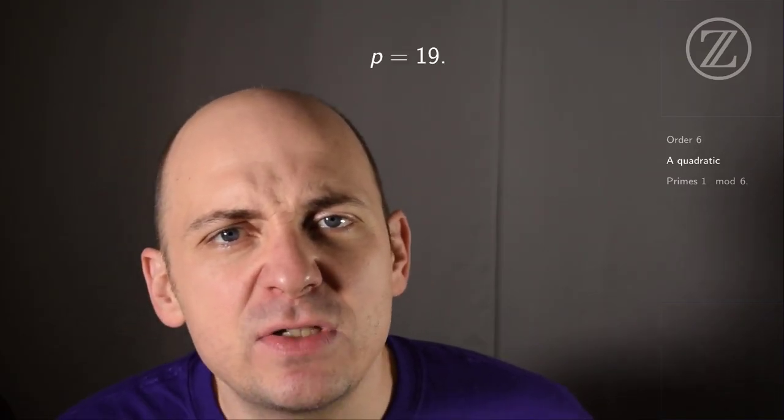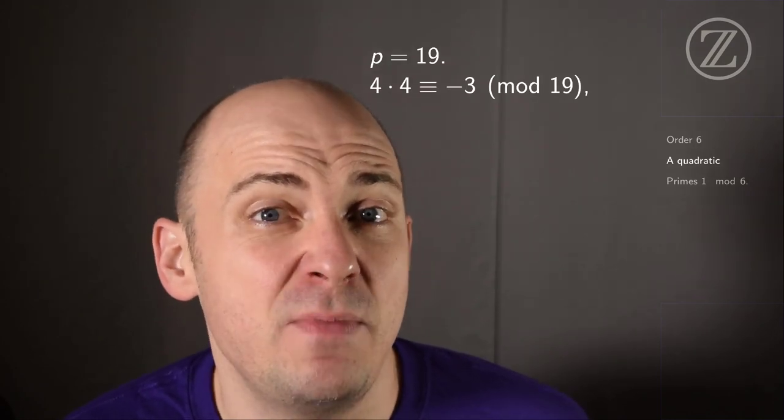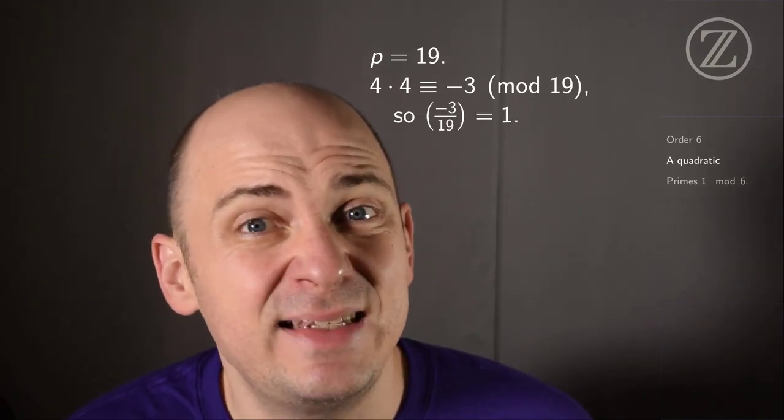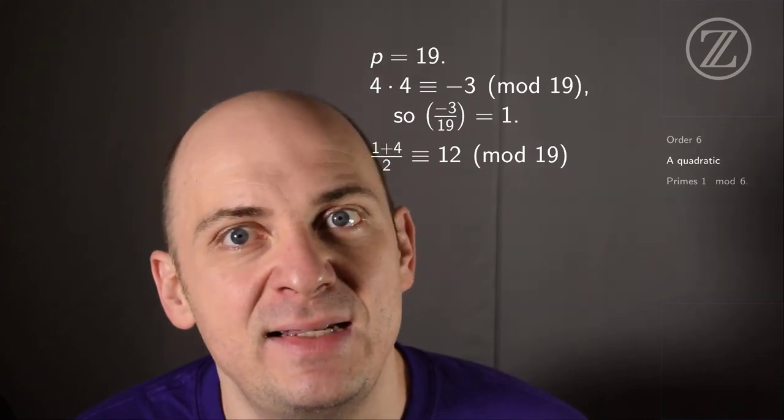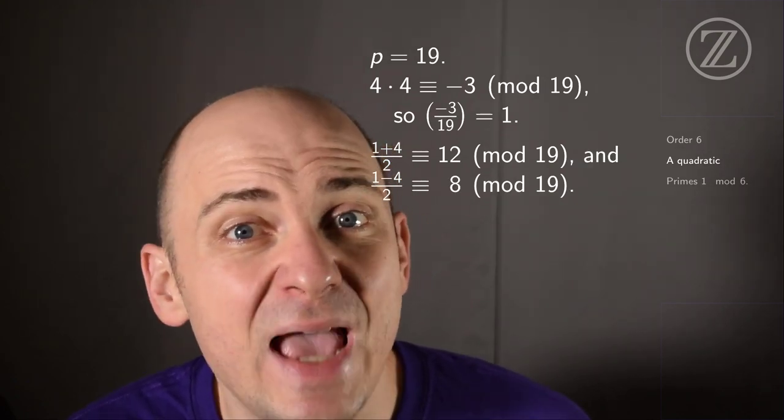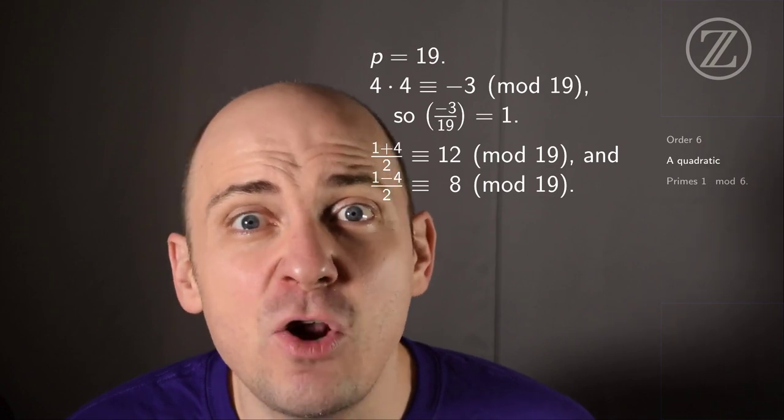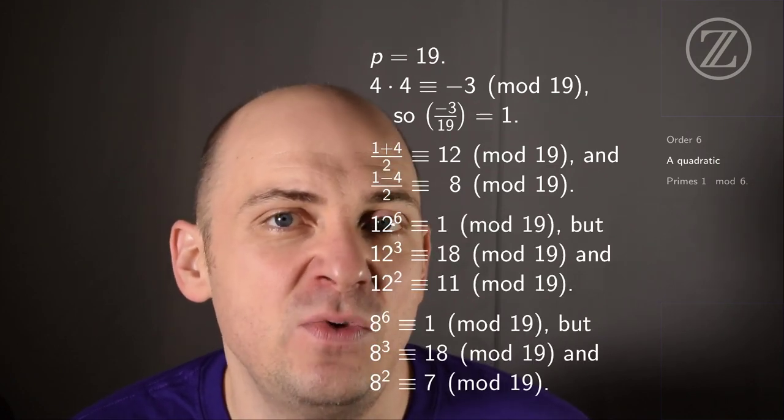It's mildly entertaining to see some numerical examples here. Set p equals 19, and we know that 4 times 4 is minus 3 mod 19. So minus 3 on 19 is 1. And sure enough, 1 plus 4 divided by 2 is 12 mod 19, and 1 minus 4 divided by 2 is 8 mod 19. And 12 and 8 are both elements of order 6 in U19.